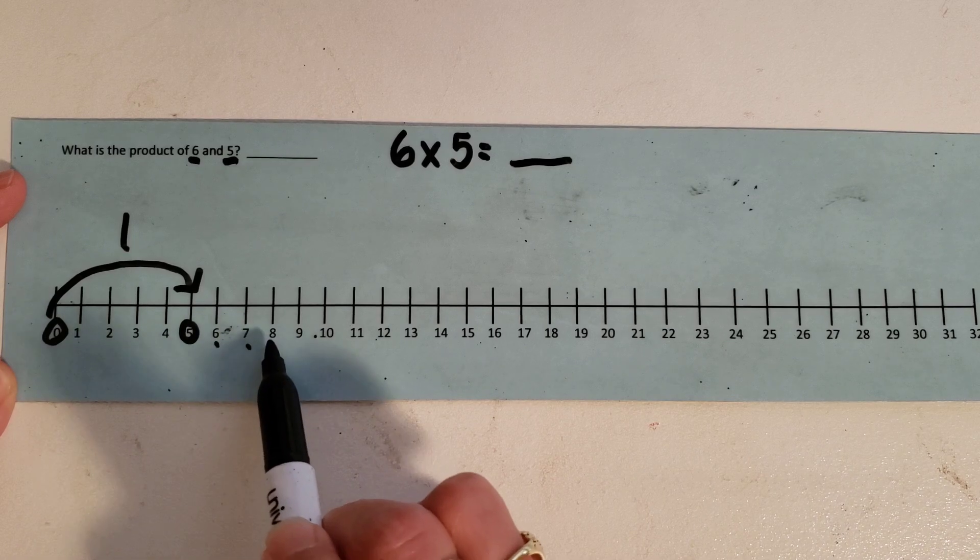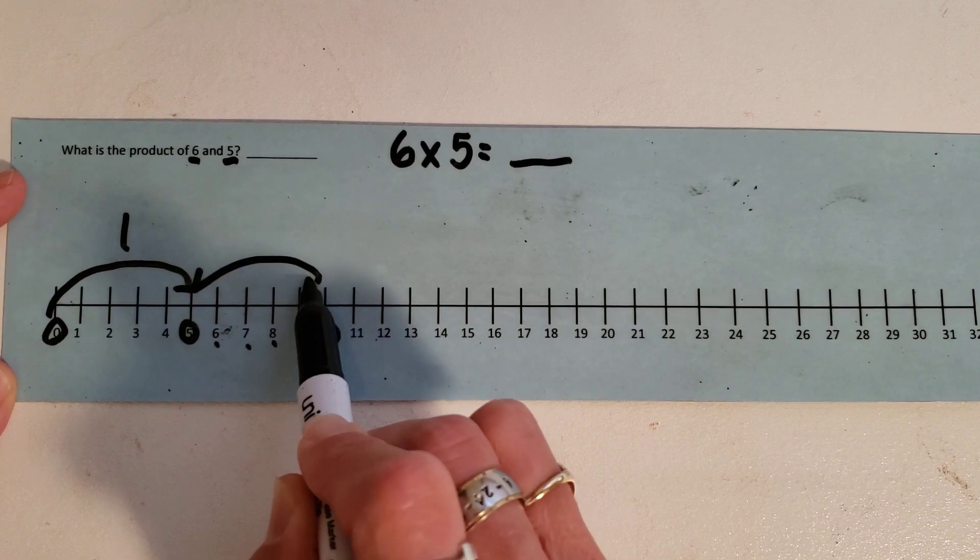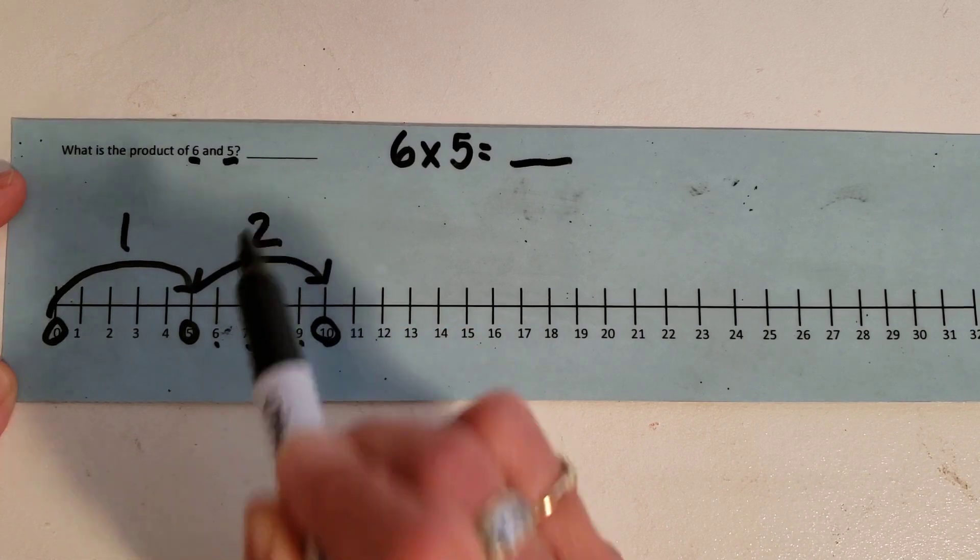Then one, two, three, four, five. This is my second hop or my second group of fives.